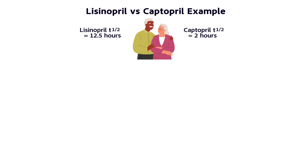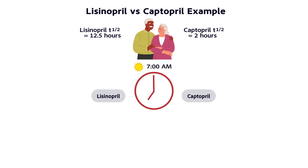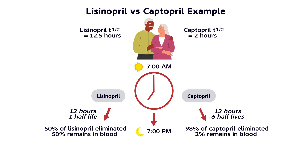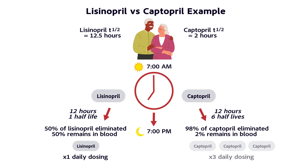Let's say our patient is taking their blood pressure med at 7 a.m. We can see that by 7 p.m. we still have about half the dose of lisinopril, whereas captopril has been 98% eliminated. So it makes sense that we could dose lisinopril once a day, whereas captopril must be dosed more like three times a day to ensure we can maintain high enough blood levels to actually control that blood pressure.